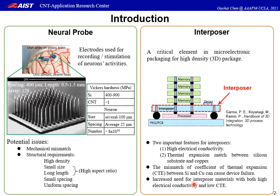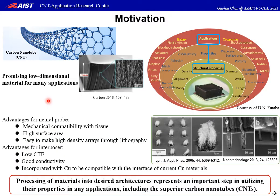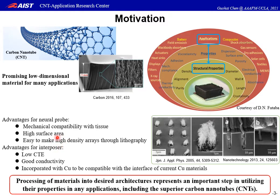The need for interposer materials with both high electrical conductivity and low CTE is increasing. Carbon nanotubes have attracted extensive attention due to their exceptional properties as a promising low-dimensional material for many applications. Their unique structural properties enable superior applications as illustrated in this graph. In terms of neural probes, carbon nanotubes are kind of soft — over two orders of magnitude softer than silicon — ensuring mechanical compatibility with tissue. Carbon nanotubes also have very high surface area and good sensitivity. Using laser graphitization, they can be made with high density.